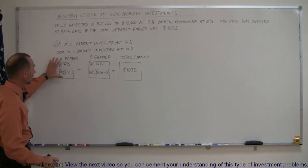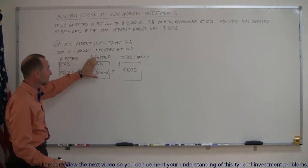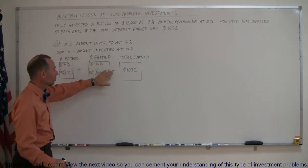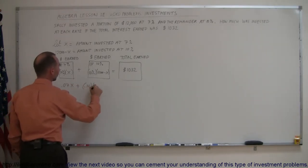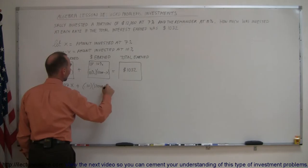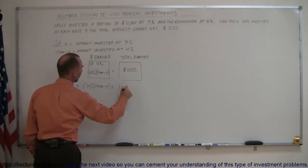In other words, the money earned at 7% plus the money earned at 10% must equal the total money earned. And now we have our equation: 0.07x plus 0.10 times (12,000 minus x) equals 1,032.